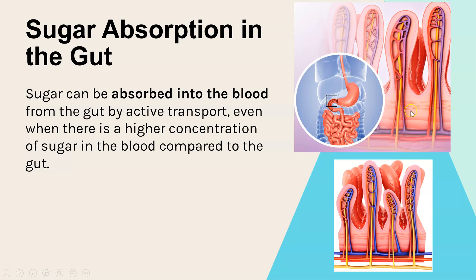The second example is in animals. In humans, sugar is absorbed into the bloodstream from your gut by active transport. It's a similar idea — even though you might have a low concentration of sugar in your gut and a high concentration of sugar in your blood, active transport is still needed.